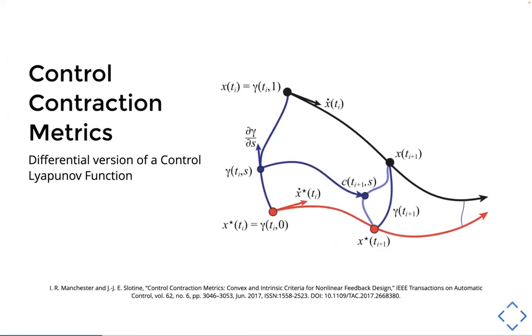So a super quick overview on what control contraction metrics are. In class, we learned about control Lyapunov functions, where we choose the controller that makes the closed loop dynamics such that we can find a Lyapunov function that certifies stability. And control contraction metrics are very similar idea, just a differential version, where we jointly search for a metric and controller such that the contraction condition holds over the region of state space we care about.